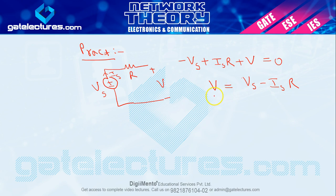Last time ideal mein jo aapka V tha wo Vs ke equal tha. To agar hum dhyan se dekhen, is baar jo aapka V hai wo Is par bhi depend kar raha hai. To maine kya kaha tha? Ideal voltage source kya hota hai? Jo source current se independent ho. Jo voltage external circuit ko dene wala hai wo source current se independent hona chahiye. Lekin practical voltage source mein aisa nahi hai, wo us par depend kar raha hai.